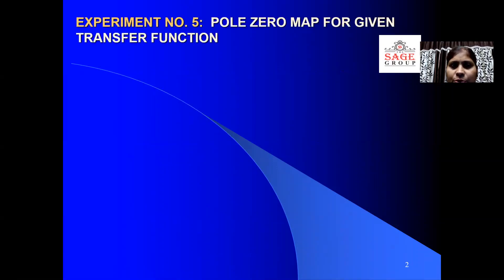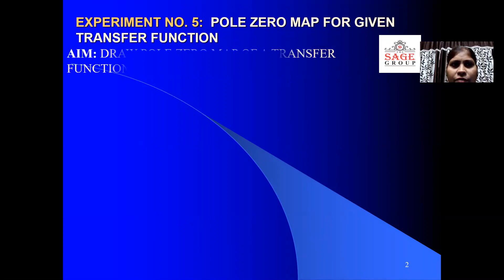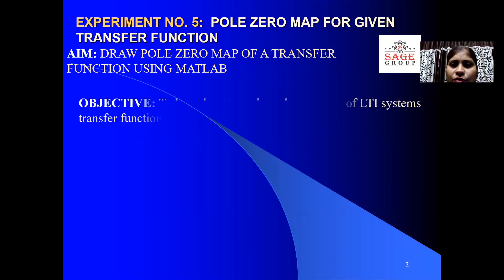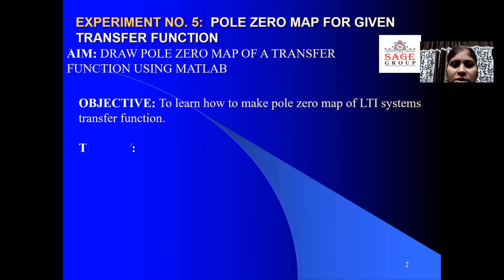I'm taking experiment number five: pole zero map for a given transfer function. The aim is to draw the pole zero map of a transfer function using MATLAB. The objective is to learn how to make a pole zero map of an LTI system from a transfer function.